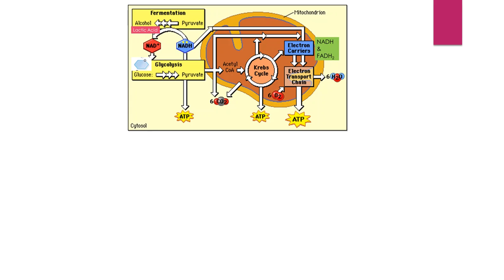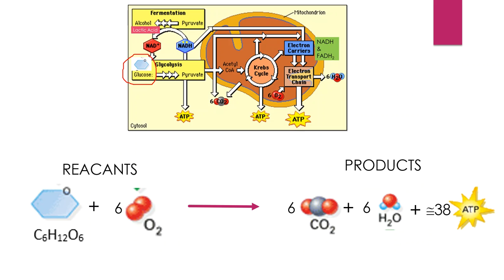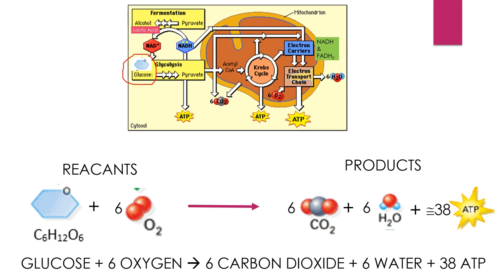Here's the overview of cellular respiration. Our reactants are glucose and oxygen. Our products are carbon dioxide, water, and about 38 ATP. The equation is: glucose + 6O₂ → 6CO₂ + 6H₂O + 38 ATP.